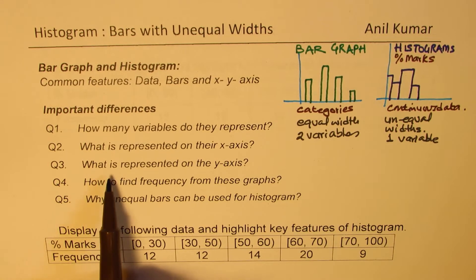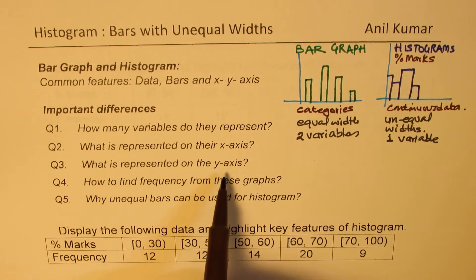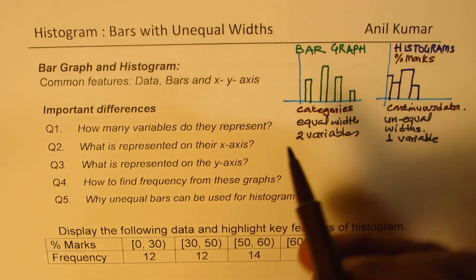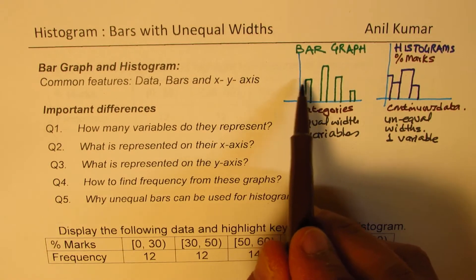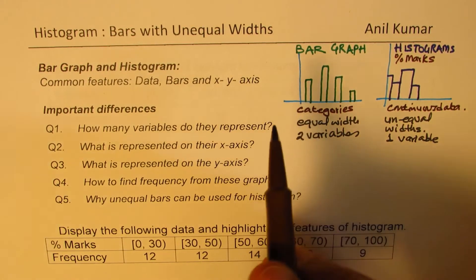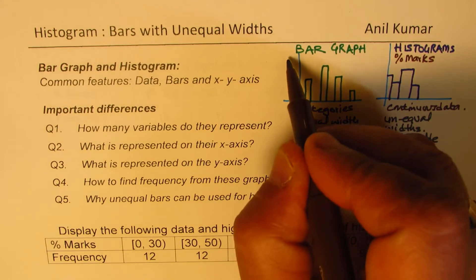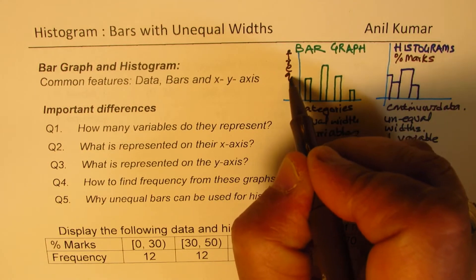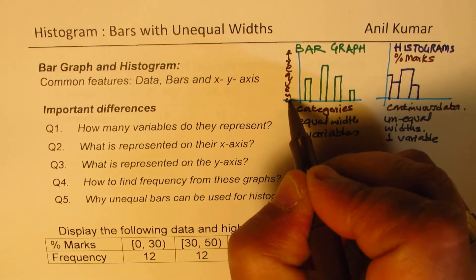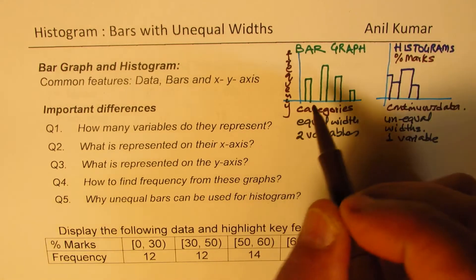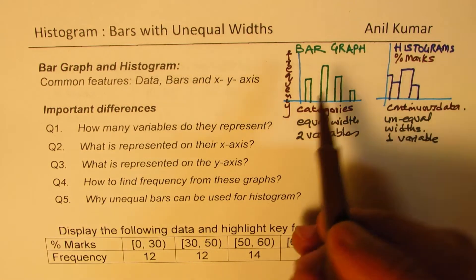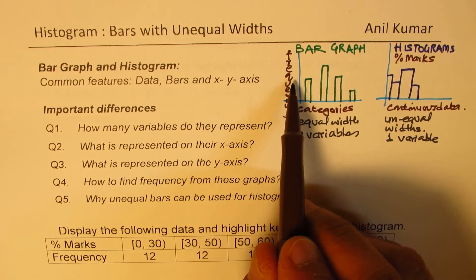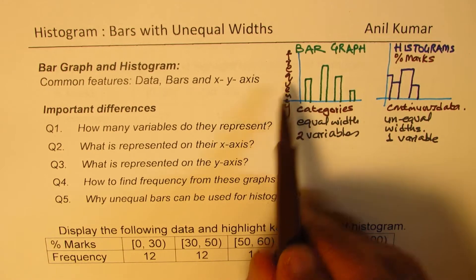The next question is: what is represented on the y-axis? In a bar graph, for each category you get the number of items — that is the frequency — which is represented on the y-axis.